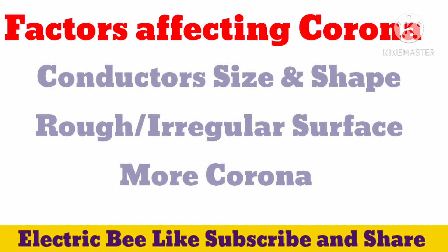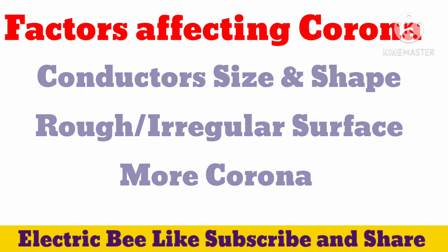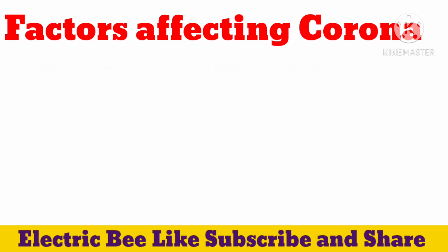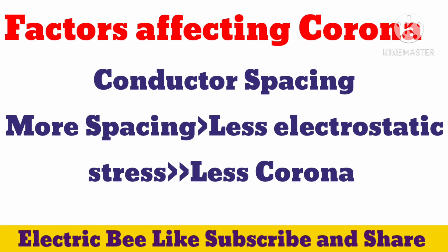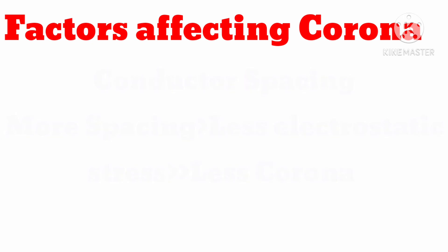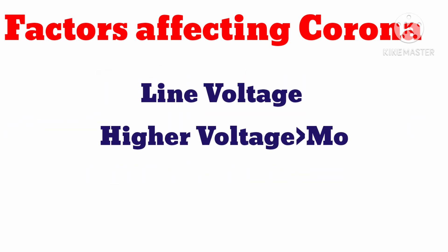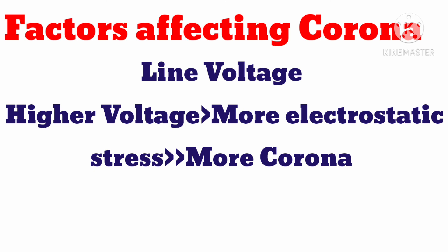The second factor is conductor size and shape — if the conductor is rough or irregular, there will be more corona. The third factor is conductor spacing — greater spacing reduces electrostatic stresses. The fourth factor is line voltage — higher line voltage creates more electrostatic stress, causing more corona.